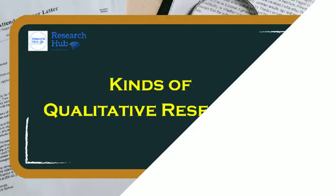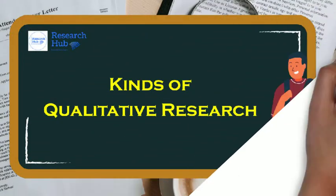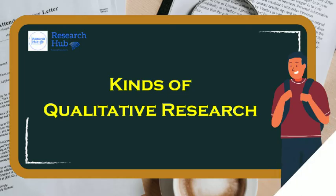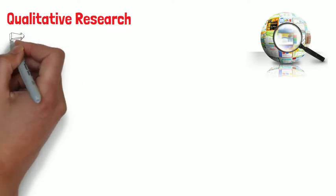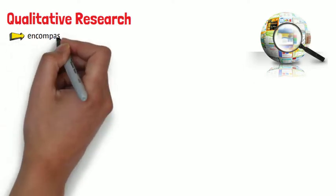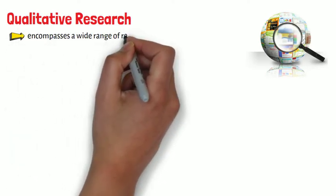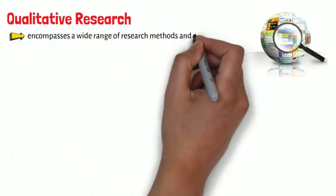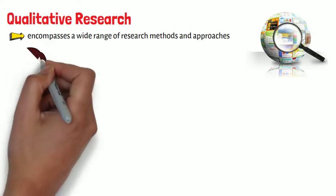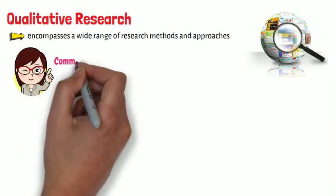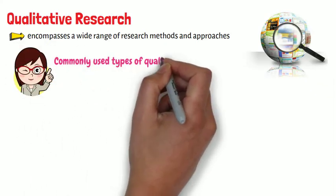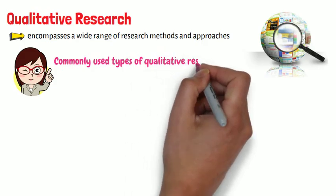Kinds of qualitative research. Qualitative research is a broad field that encompasses a wide range of research methods and approaches. Some of the most commonly used types of qualitative research include the following.